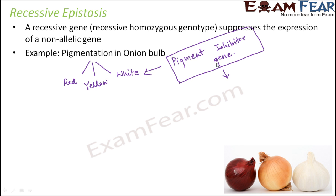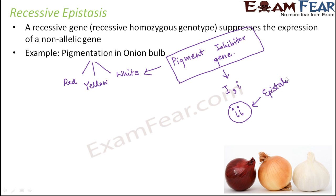The pigment inhibitor gene is the epistatic gene, and it shows its epistatic effect only in the recessive condition. We denote this gene by I — capital I and small i are the two alleles. This gene shows its epistatic effect only when present in the homozygous recessive condition (ii), which stops the phenotypic expression of red and yellow, making the onion bulb white.